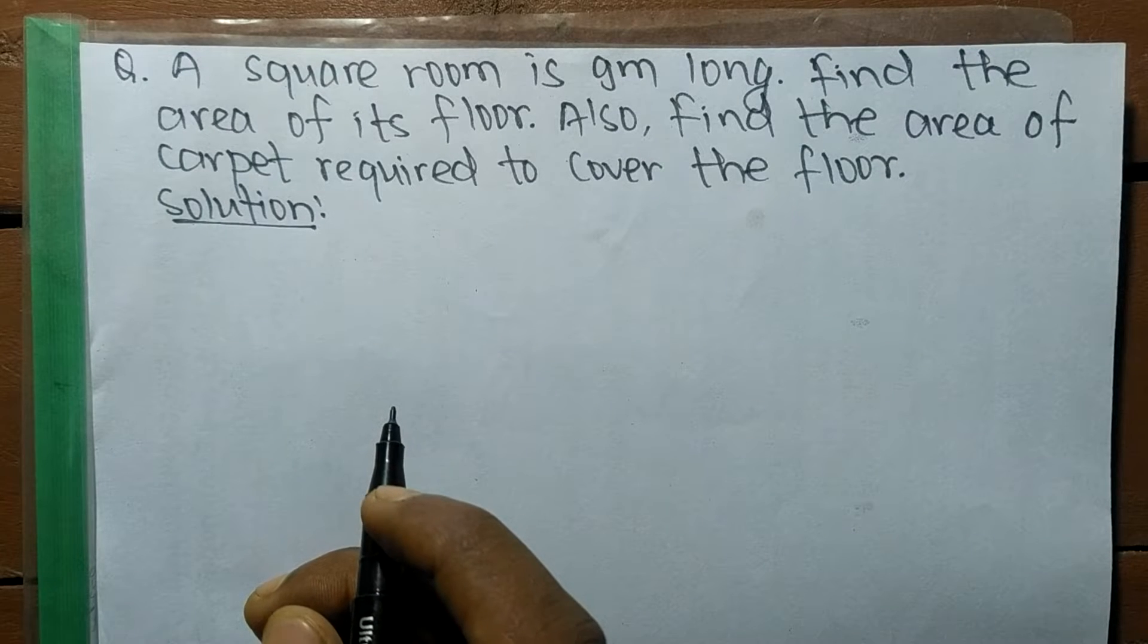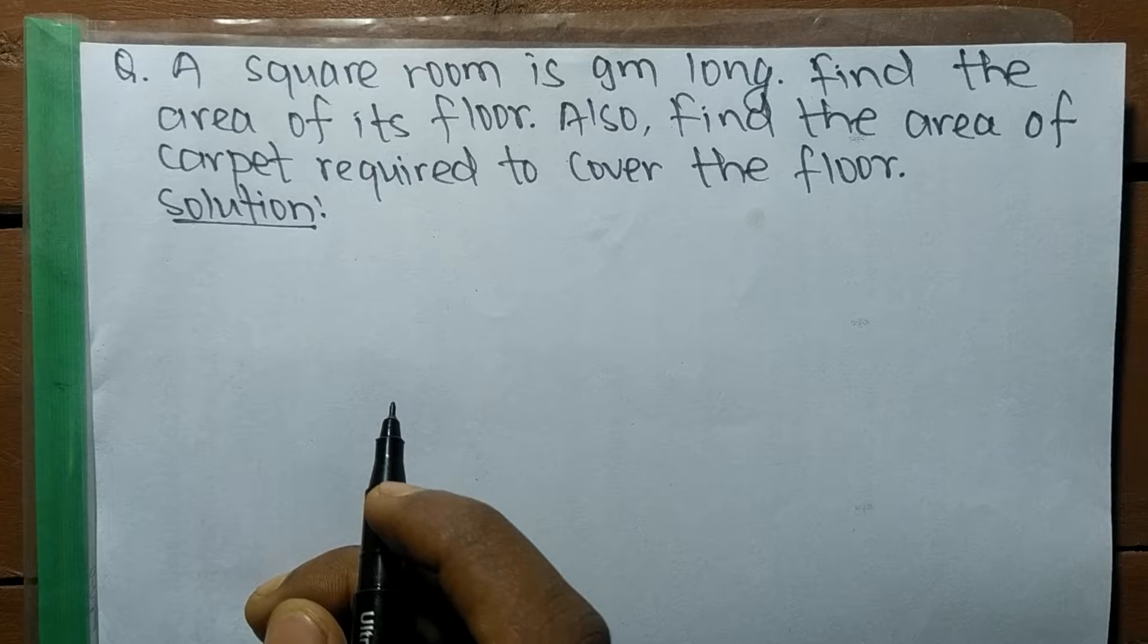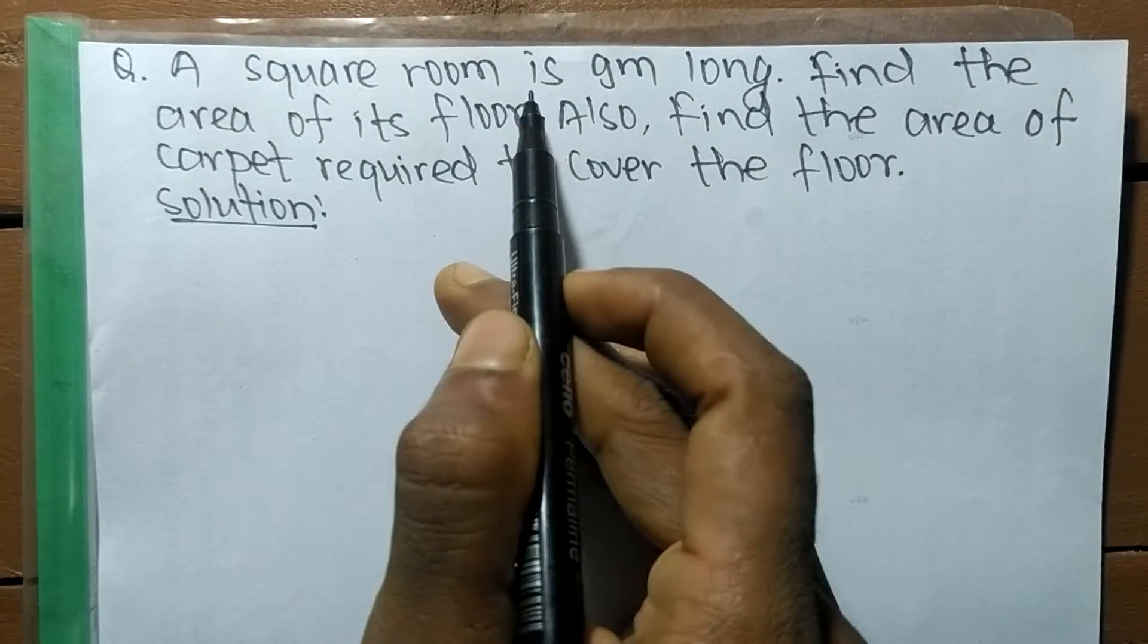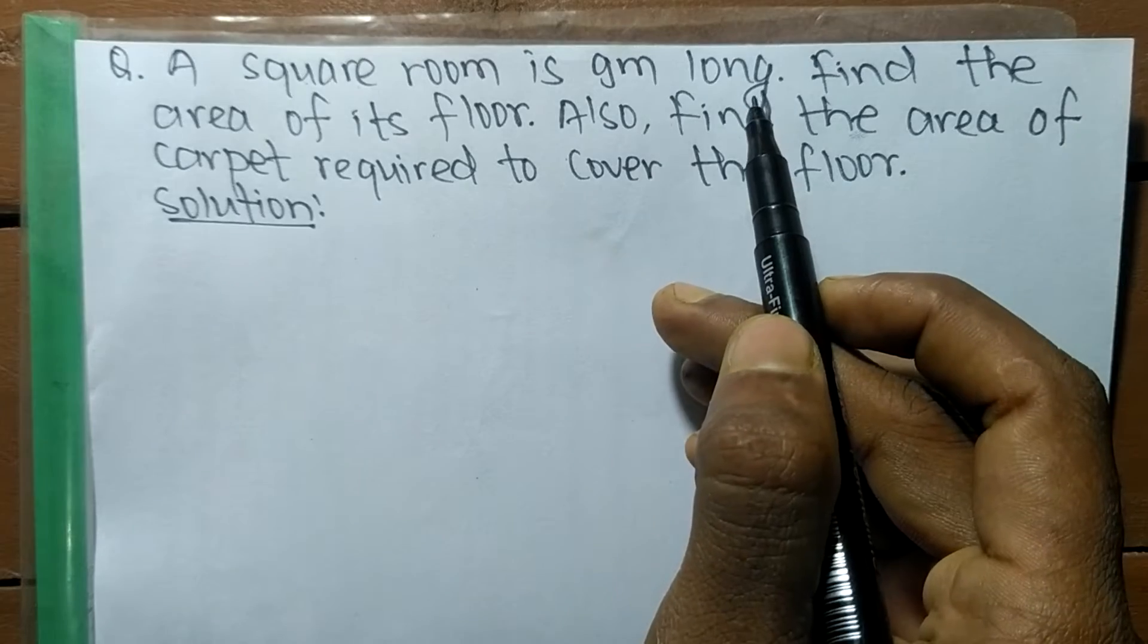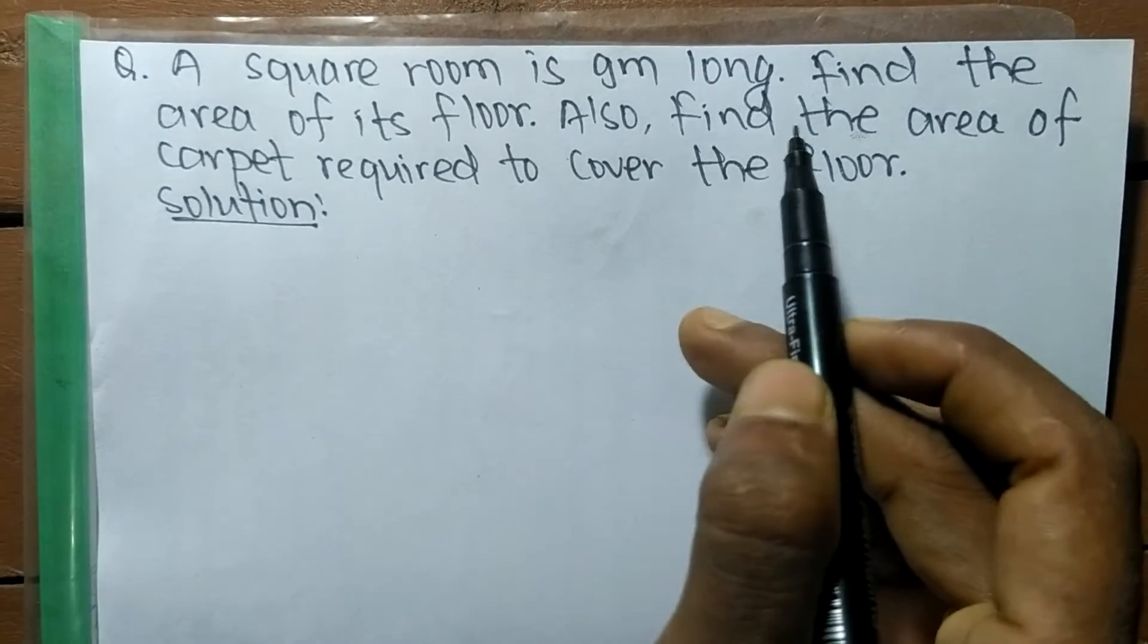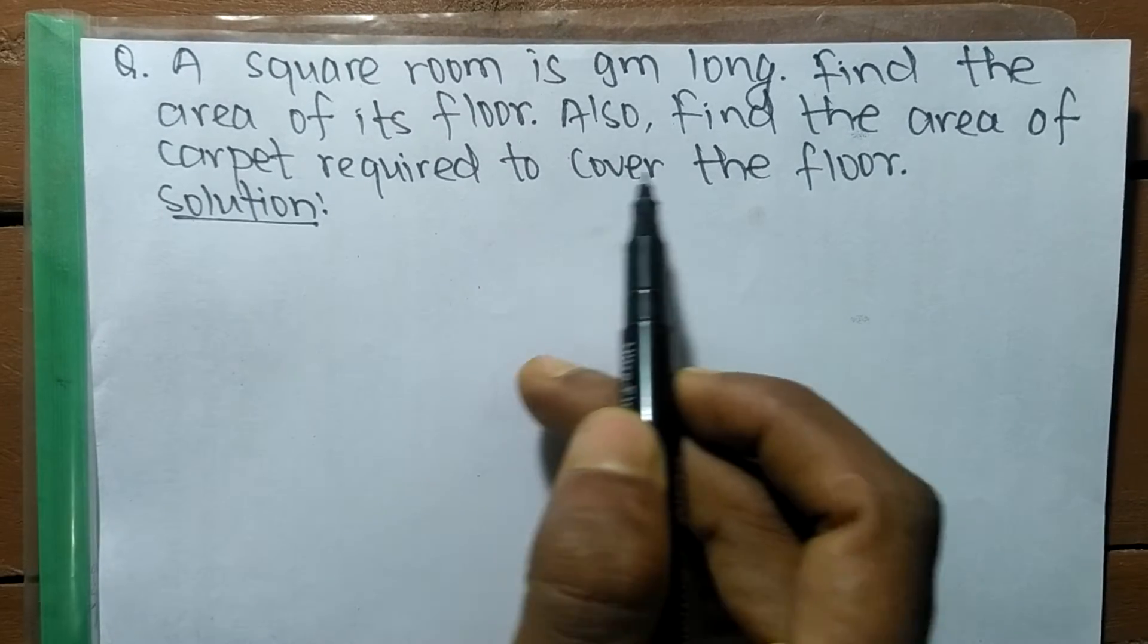Today in this video we are going to solve a word problem. The problem is: a square room is 9 meters long. Find the area of its floor. Also, find the area of carpet required to cover the floor.